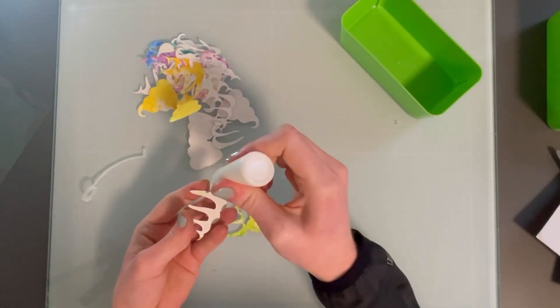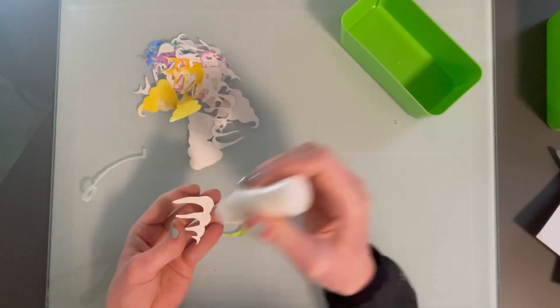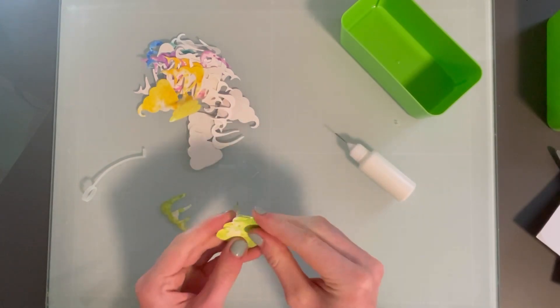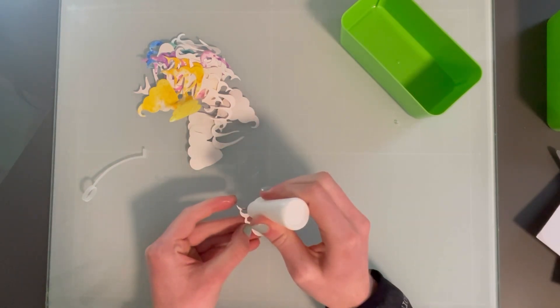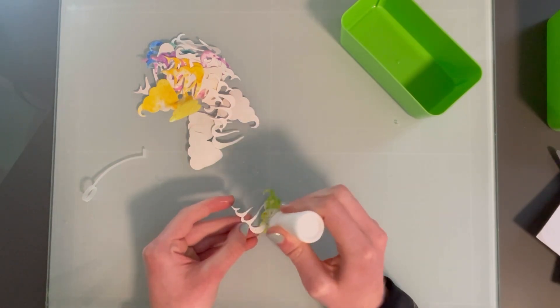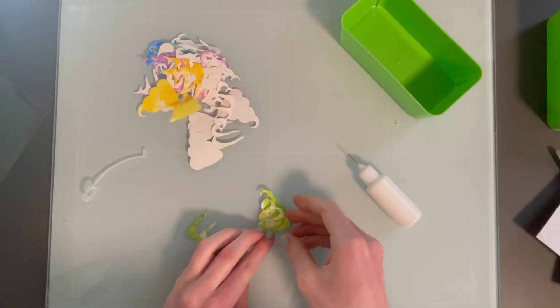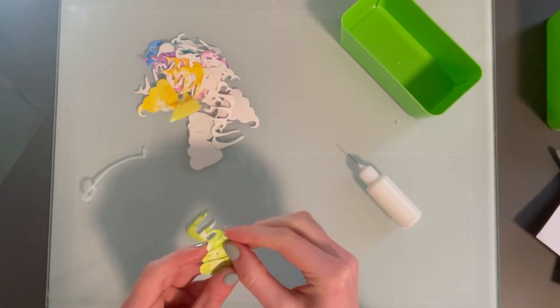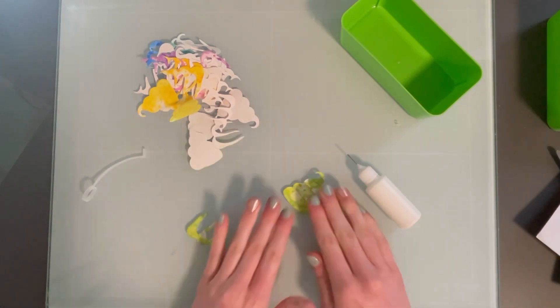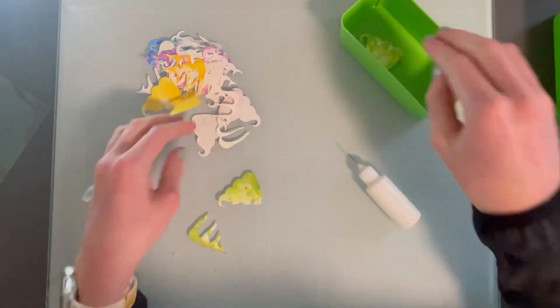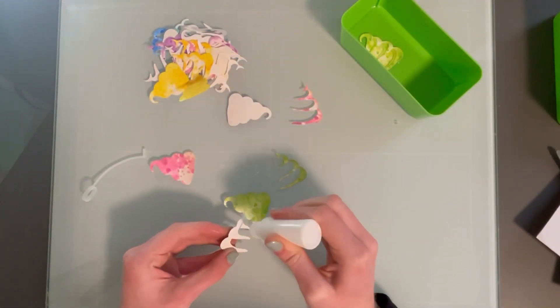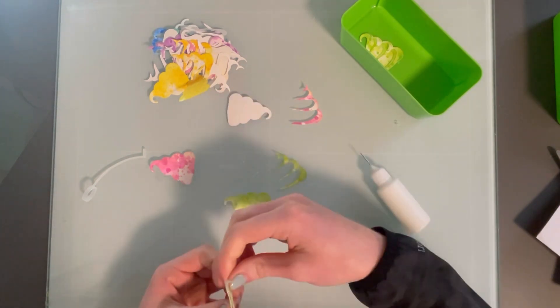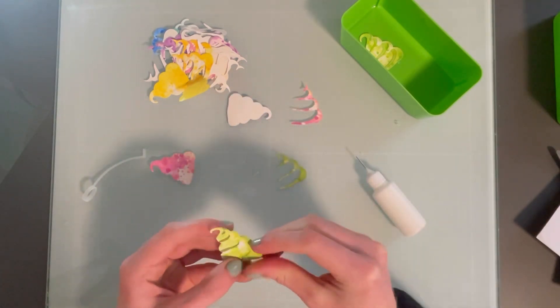So then once I had those all ink blended and ready, I just glued them together with a little bit of liquid glue. I used Barely Arts glue in a little fine tip bottle that I got at like a big craft store. They're really cheap there and you can get a lot of them and just fill them up with whatever glue you use. So that's nice. And then I'm just going to layer each of these ice cream cones.